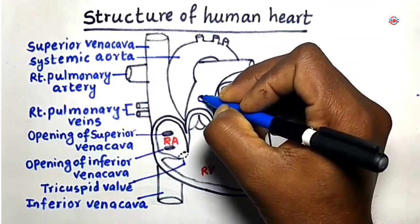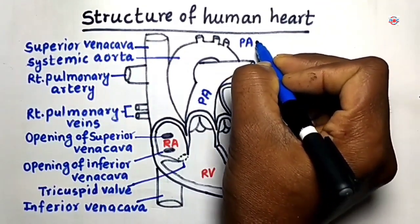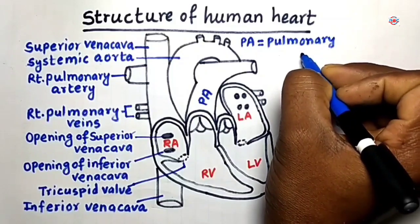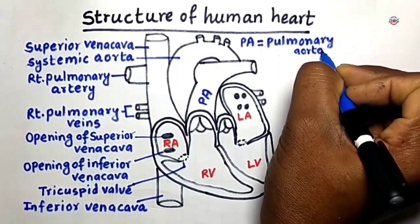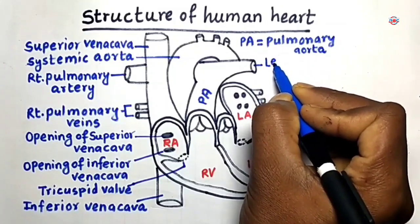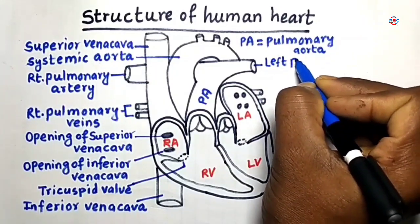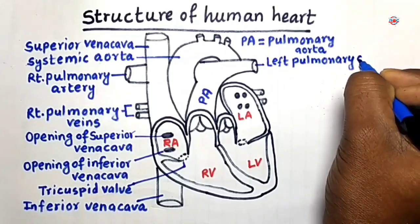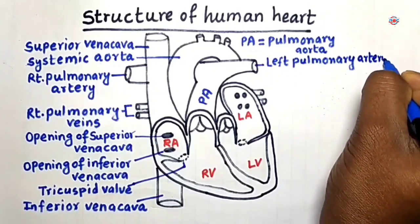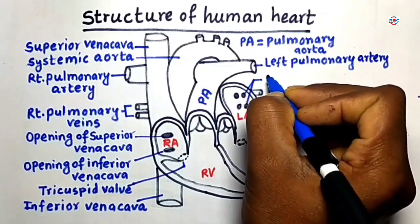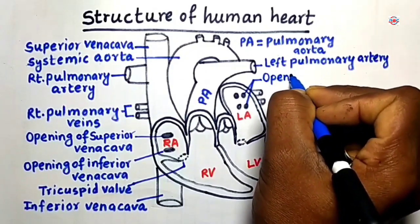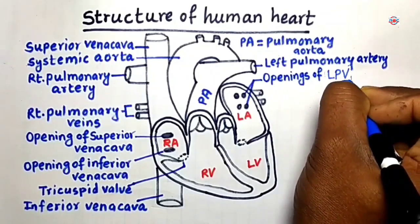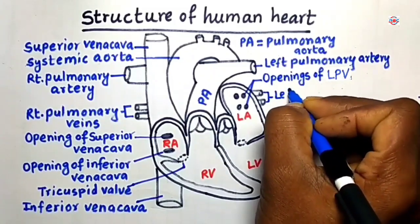Pulmonary Aorta. These are Openings of Left Pulmonary Vents. These are Left Pulmonary Vents.